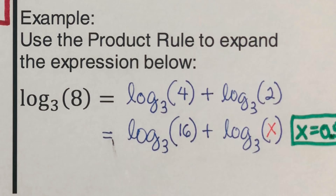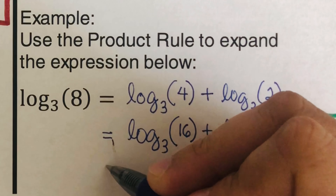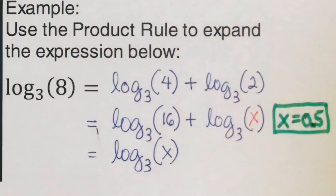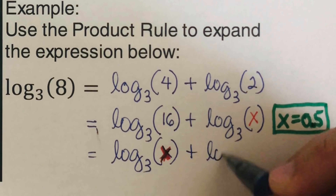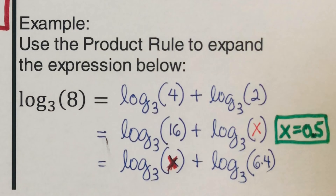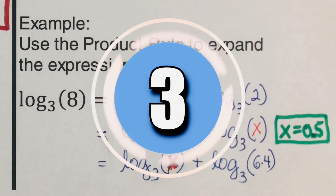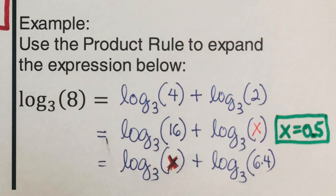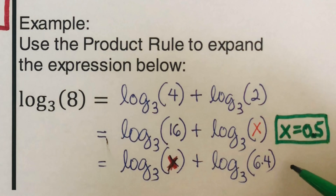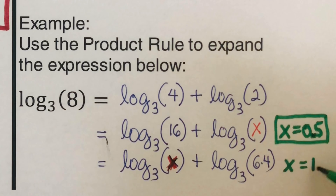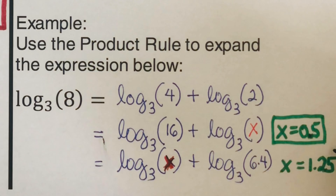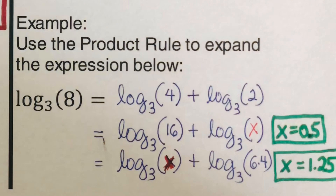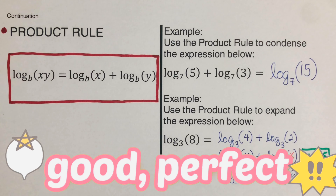Try this next problem: log of 6.4 to the base three plus log of x to the base three equals log of eight to the base three. We need to find what number multiplied by 6.4 gives us eight. That number x is 1.25, since 1.25 times 6.4 equals eight.